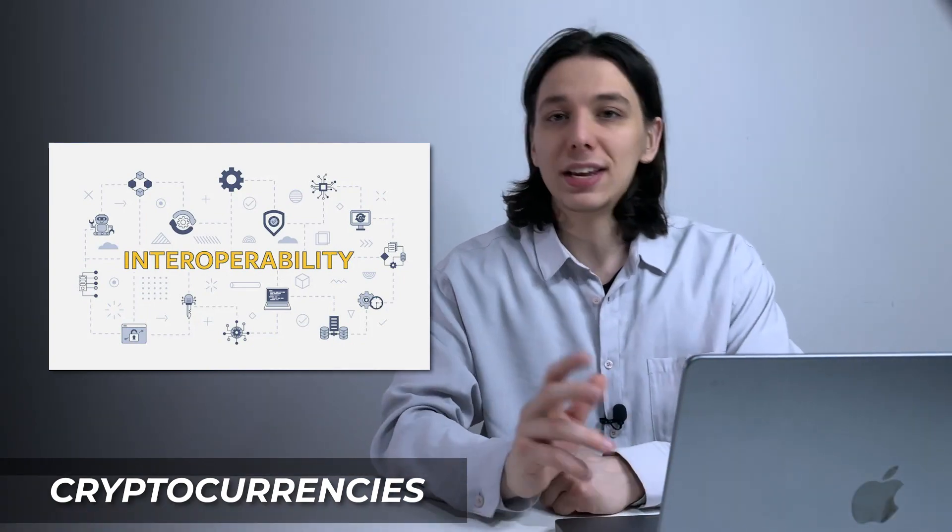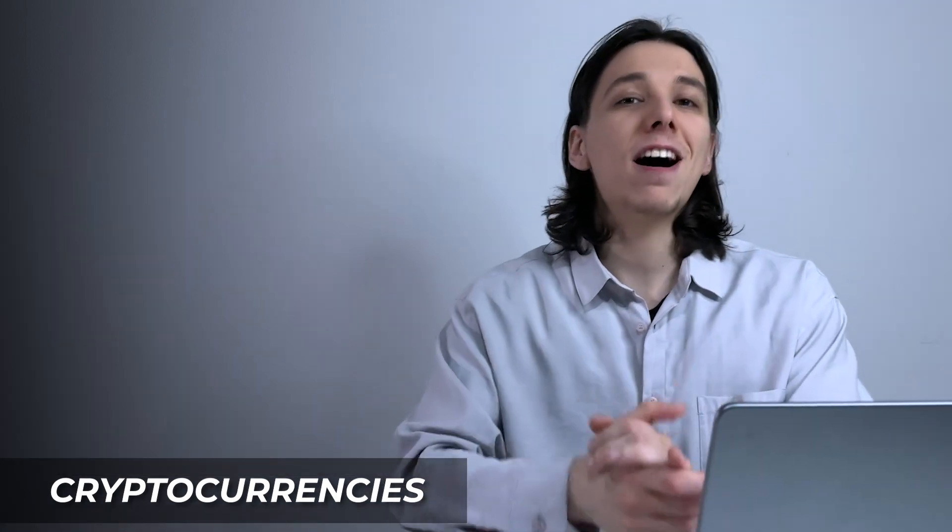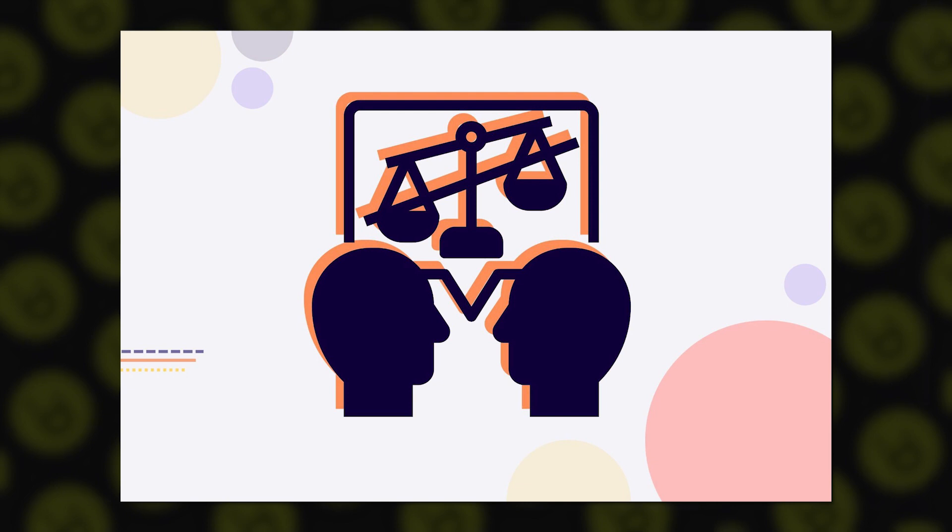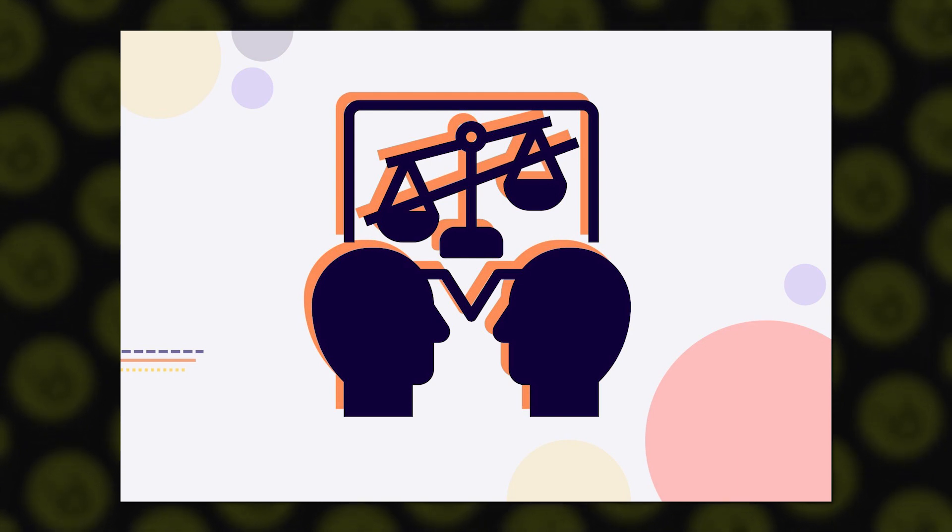And also we have ethical issues. The use of AI in the financial sector raises ethical considerations, especially when it comes to decision-making processes. Biases in AI algorithms can result in discriminatory outcomes. If AI is used in cryptocurrency-related services, such as credit scoring or fraud detection, biased algorithms may disproportionately affect certain demographic groups, leading to unfair financial practices.